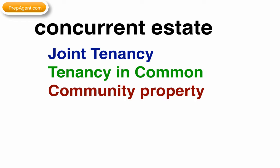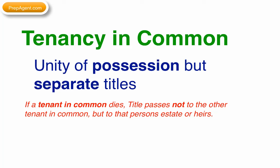Tenancy in common is the most common type of ownership, and ownership is assumed to be a tenancy in common unless otherwise stated. A tenancy in common is a form of ownership of title to real estate by two or more persons. Although they have unity of possession, they each have separate and distinct titles. In the event that one of the tenants in common dies, his or her title does not pass to the other tenant in common, but rather to his or her heirs or their estate.